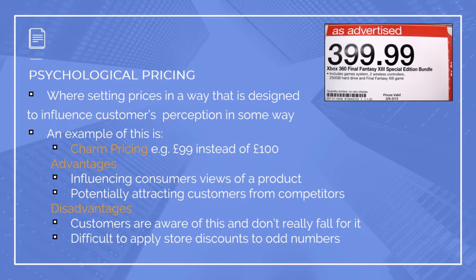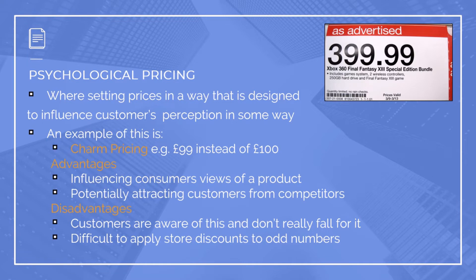This can be called charm pricing. Another example is where it's £99 instead of £100 — even though it is only £1 cheaper, it's trying to influence you to think the saving is more than that. Psychological pricing can also work the other way, where you charge more for a product, giving a perception of quality. For example, charging £200 for a pair of jeans leads people to automatically think they are really good quality. The advantage is it allows you to influence a customer's view of a product.